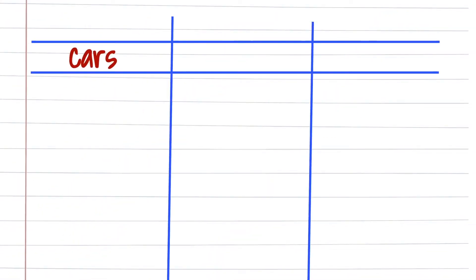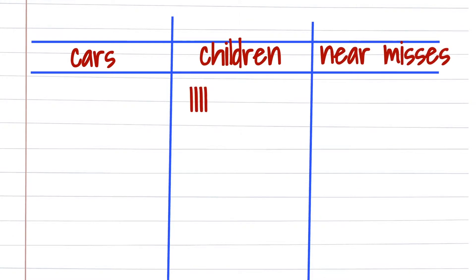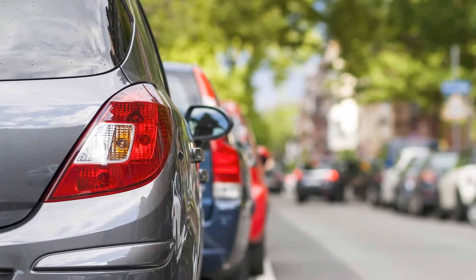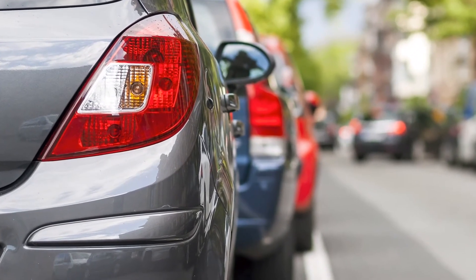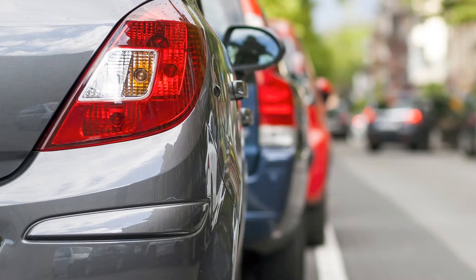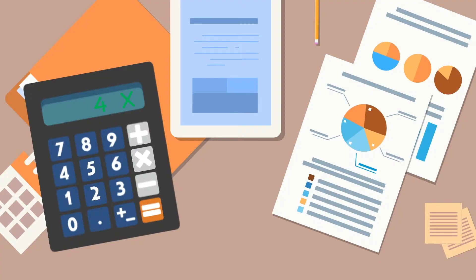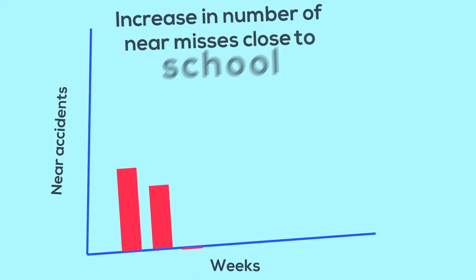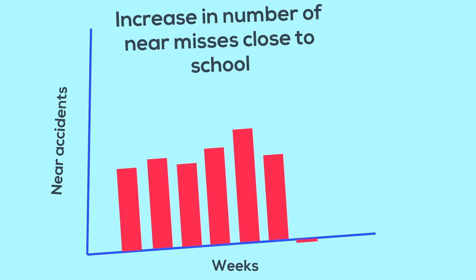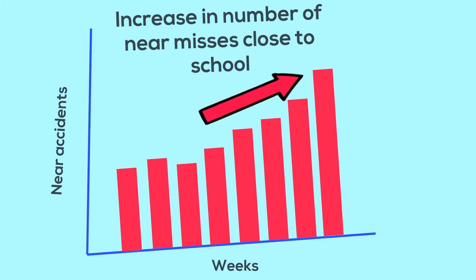We can record things like the number of cars, the number of children, the number of near misses. This gives us data to work with. If we collect our data over one week, we can then multiply it to estimate what it would have been over a fortnight. We could even multiply it by 52 to see how many near misses there could be in a whole year. Once we have our data, we can plot it into tables and create graphs to tell our story better and convey to others what the problem is.